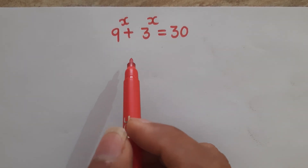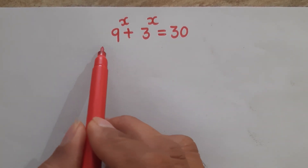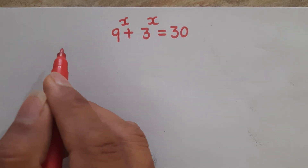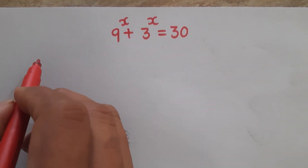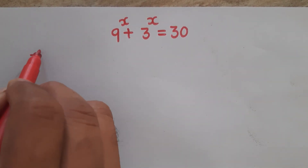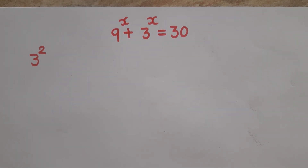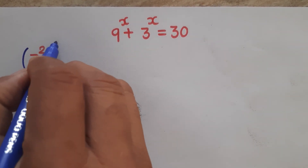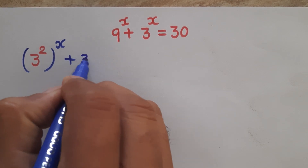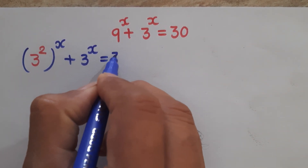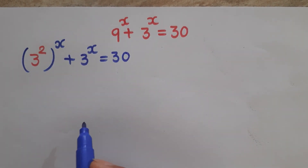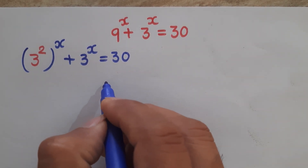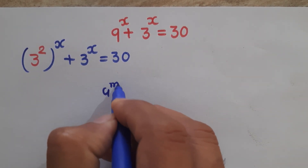Hello friends, welcome. Let's solve this problem — we have to find the value of x. We know that 9 is 3 squared, so 9 to the power (x+3) times 9 to the power x is equal to 30.